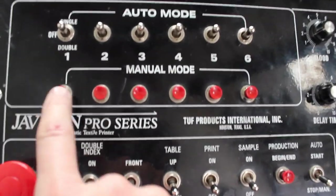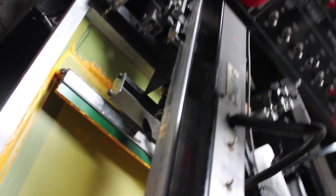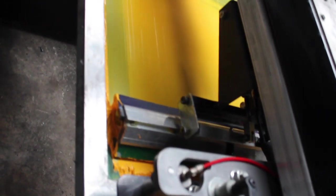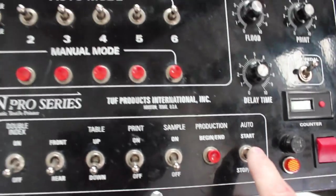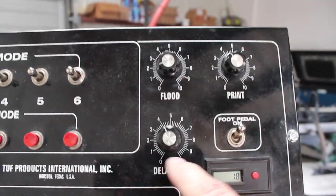These are your manual buttons. When you're first setting up your jobs, you hit your manual button pertaining to whatever station you want to do a test print. That's what these buttons are for, and it has to be in the stop manual mode.